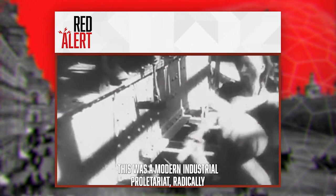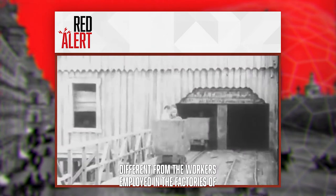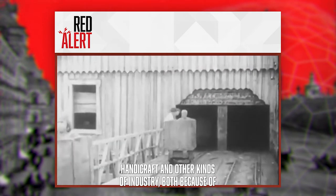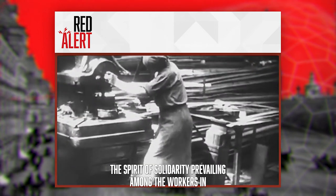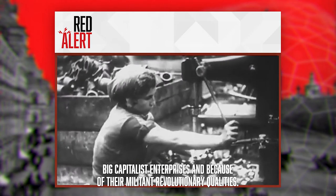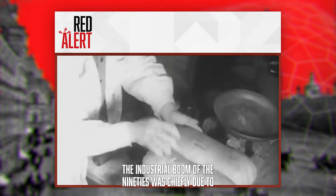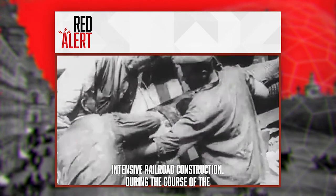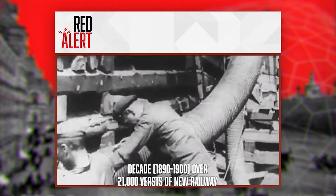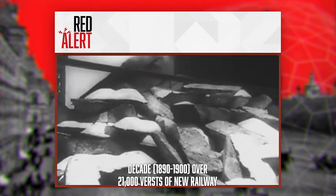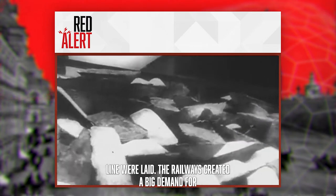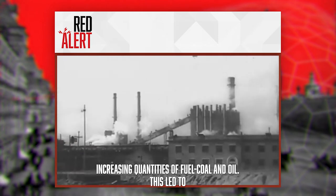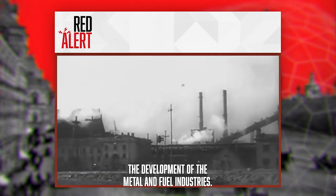This was a modern industrial proletariat, radically different from the workers employed in the factories of the period of serfdom and from the workers in small, handicraft, and other kinds of industry, both because of the spirit of solidarity prevailing among the workers in big capitalist enterprises and because of their militant revolutionary qualities. The industrial boom of the 1890s was chiefly due to intensive railroad construction. During the decade 1890–1900, over 21,000 versts of new railway lines were laid. The railways created a big demand for metal, for rails, locomotives, and cars, and also for increased quantities of fuel — coal and oil — leading to the development of the metal and fuel industries.